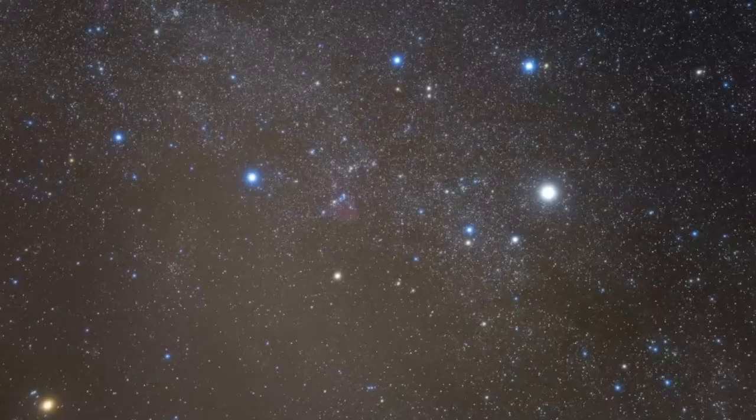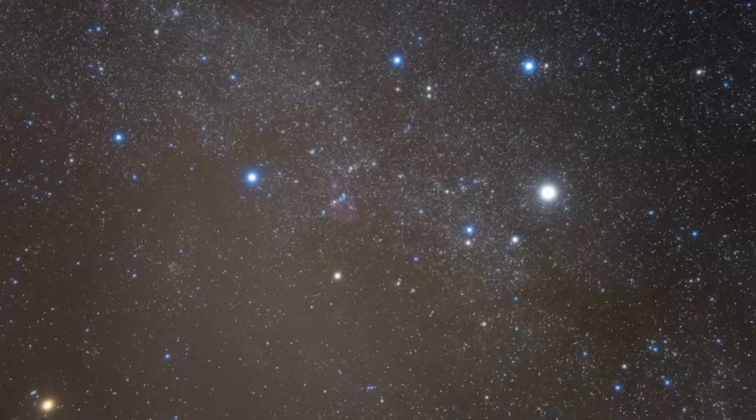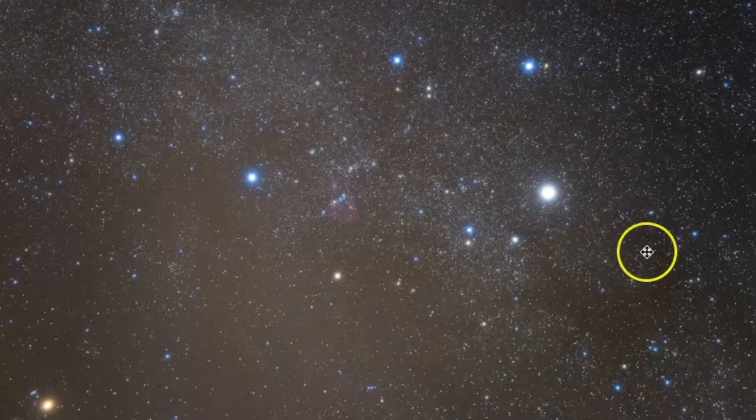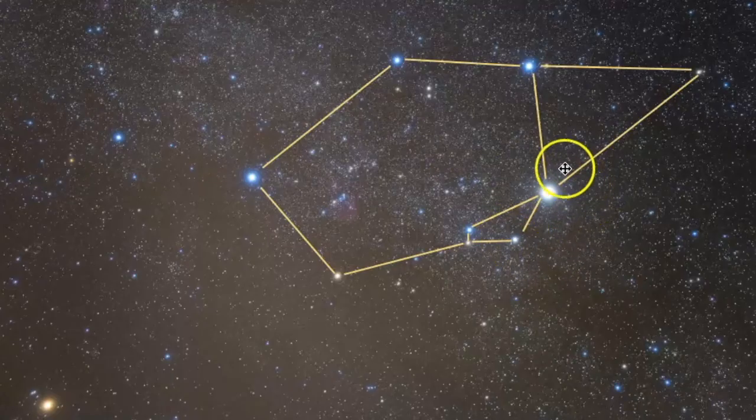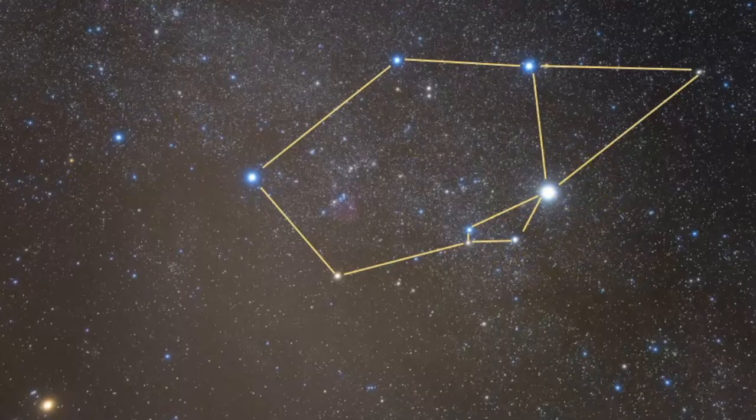One of the easiest constellations to find during the winter season in the northern hemisphere is Auriga, and this is because it has this distinctive pattern in the sky and this bright yellow star called Capella. In this video, we will take a closer look at Capella, which is actually a quadruple star system, along with getting some practice on recognizing this constellation.